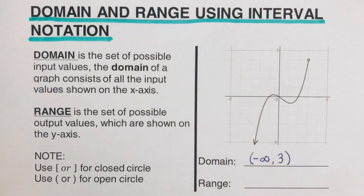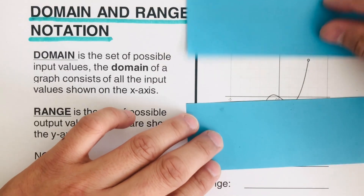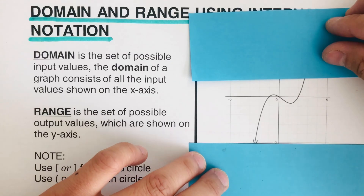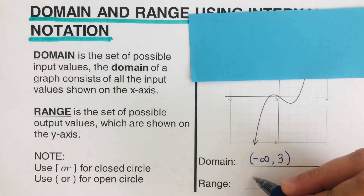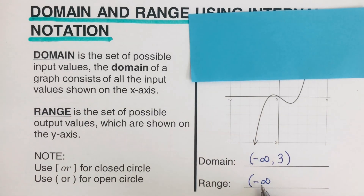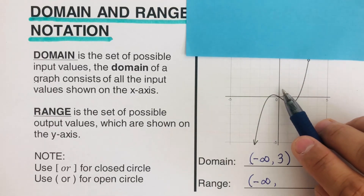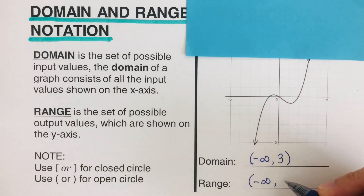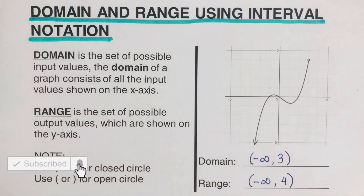Now let's look at the range, which refers to the possible y-values. We determine the limit at the bottom and the limit at the top. The bottom goes to infinity, so we write parenthesis negative infinity. At the top, it stops at positive four, but that's an open circle, so we use a parenthesis. The range is: parenthesis negative infinity, four parenthesis. So this is the domain and this is the range of this graph.